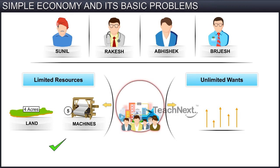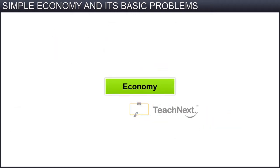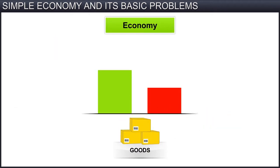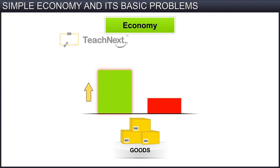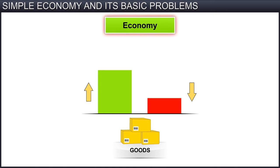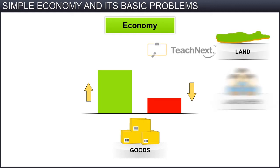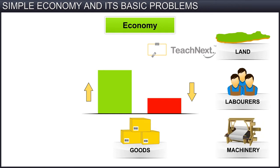Let us understand how a society or an economy uses its limited resources in the best possible way. An economy has to see which goods people want more of and which goods they want less of. Then, it needs to increase production of those goods in higher demand and decrease production of those goods in less demand. For this, an economy has to move or transfer some resources like land, labourers, and machinery from production of one good to another. This is known as allocation of resources.